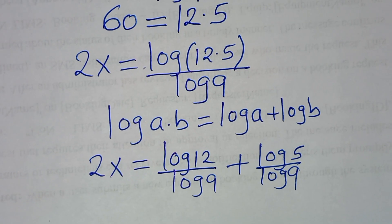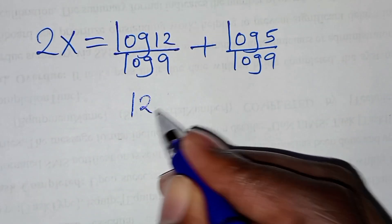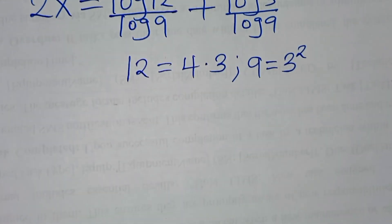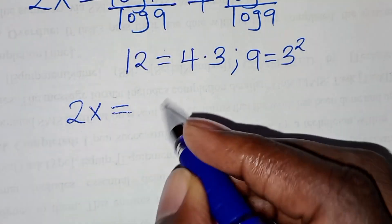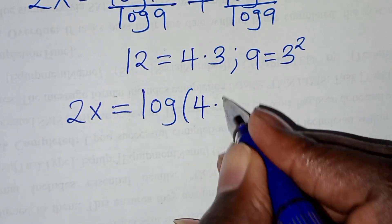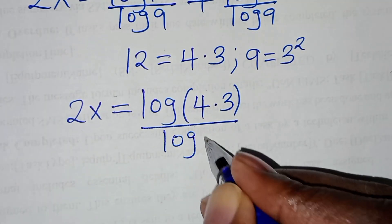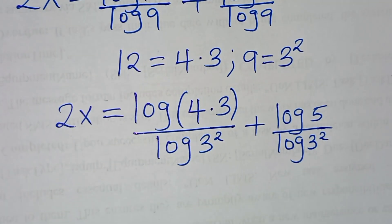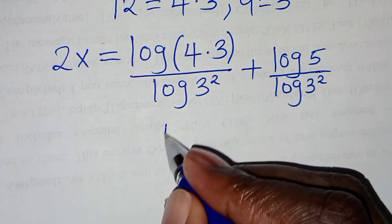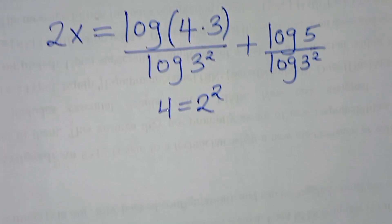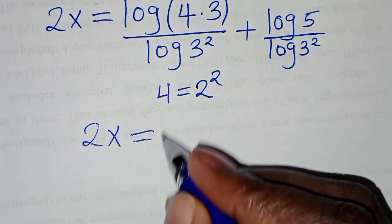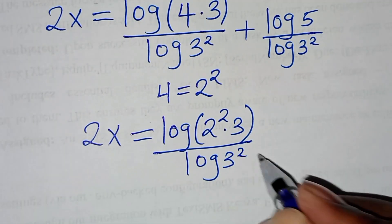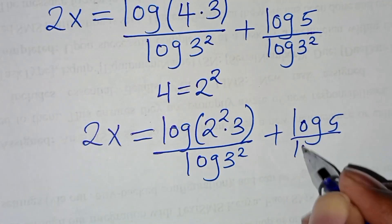Let's proceed. We can express 12 as 4 times 3, and we can express 9 as 3 to the power 2. So this implies that here we have 2x equal to log of 4 times 3, divided by log of 3 to the power 2, then plus log 5 divided by log of 3 to the power 2. The next step is that we can express 4 as 2 to the power 2. So this implies 2x equal to log of 2 to the power 2 times 3, divided by log of 3 to the power 2, then plus log 5 divided by log of 3 to the power 2.